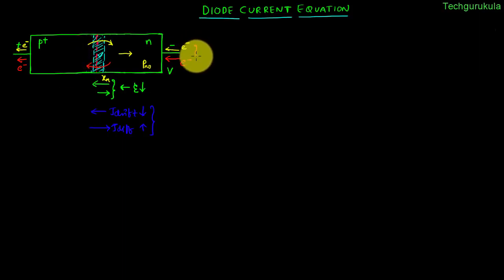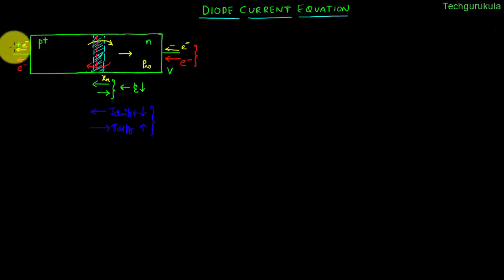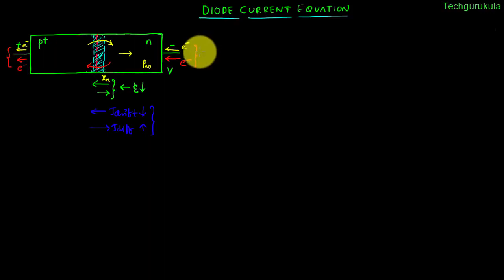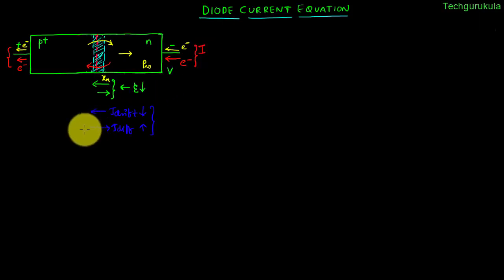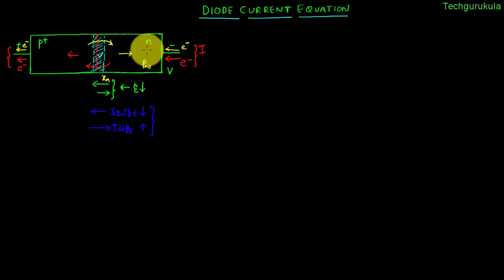The number of electrons supplied into the p-n junction diode by the source would be exactly equal to the number of electrons taken out of the diode by the source. We call this number of electrons flowing per unit time as the current I flowing through the diode. But as this injection, diffusion, and recombination process happens constantly, the concentration in the n-type material should not be changing with respect to time. But we do not know exactly how the distribution varies with respect to distance.